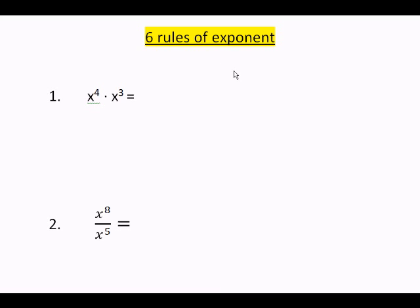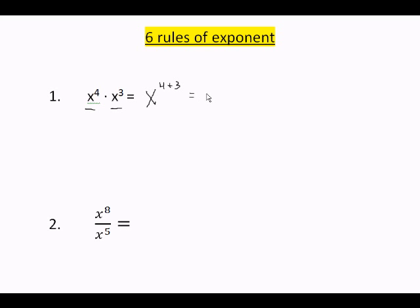Welcome. This video covers the six rules of exponents. Rule 1: when you multiply two numbers with the same base, the base stays the same and you add the powers. So X to the fourth times X to the third equals X to the 4 plus 3, which equals X to the 7th power.